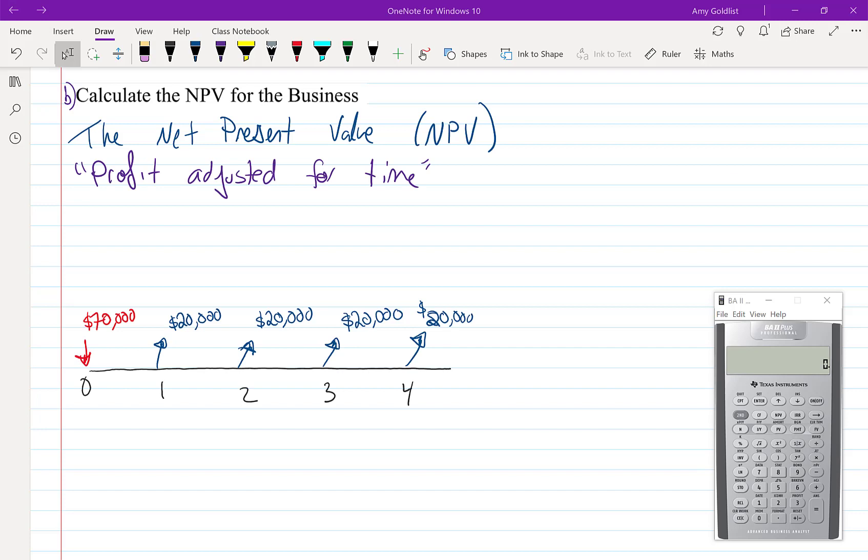The net present value is the profit adjusted for time. That's how I like to think of it. What it really is, is the present value of money in, let's put that in brackets, minus the present value of all the money out. This might remind you of an equation of value. It really should. But here, they're not going to be equaling each other. They're going to be different. And that difference is the net present value.